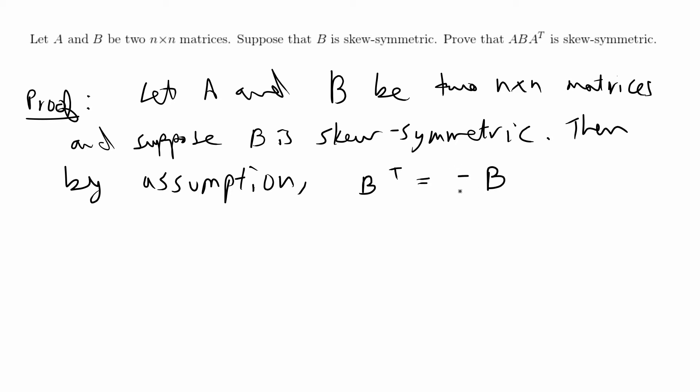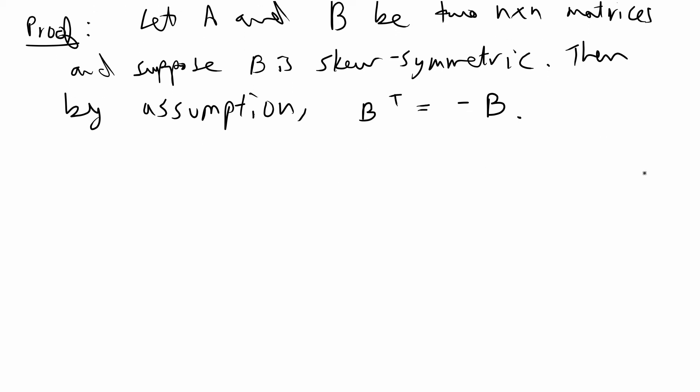You can think of this as a scalar, so you can think of that as negative 1 times B, but it's basically going to be negative the values of the matrix B. That is the definition of skew-symmetric, so we can assume that this is true by the assumptions that were given in the proof.